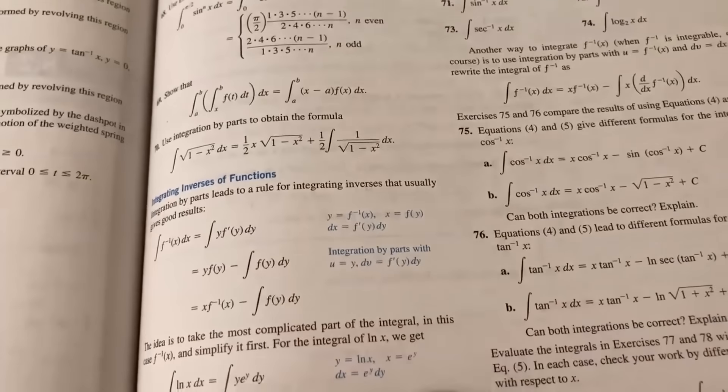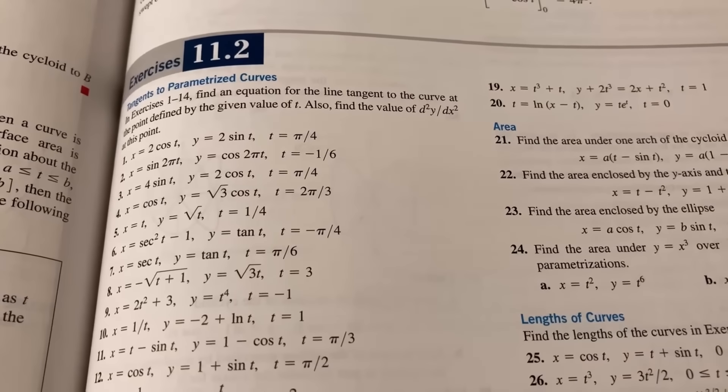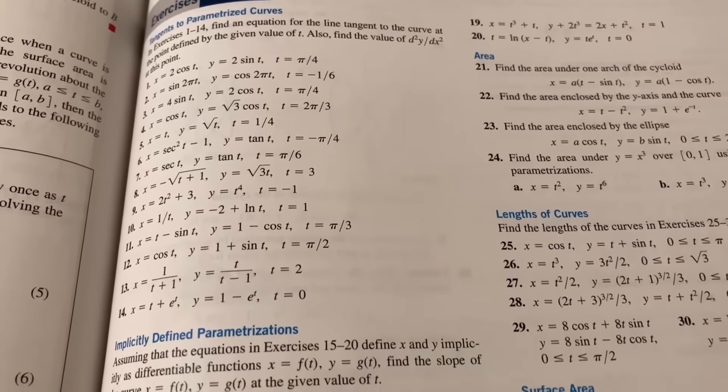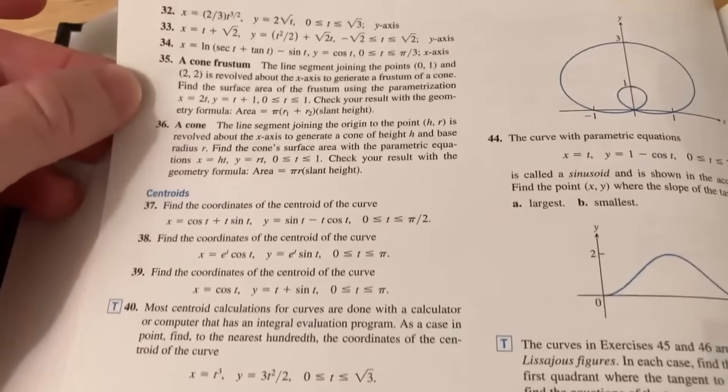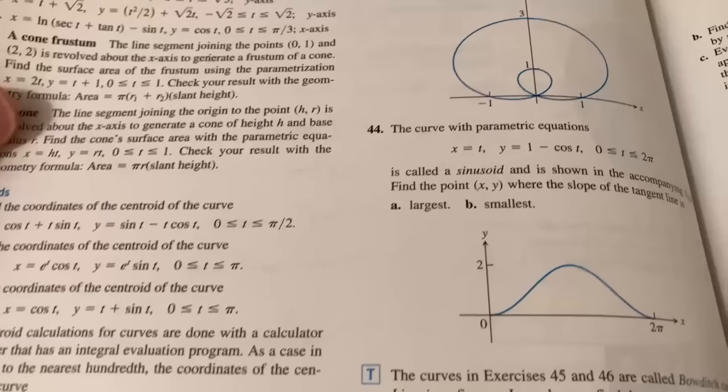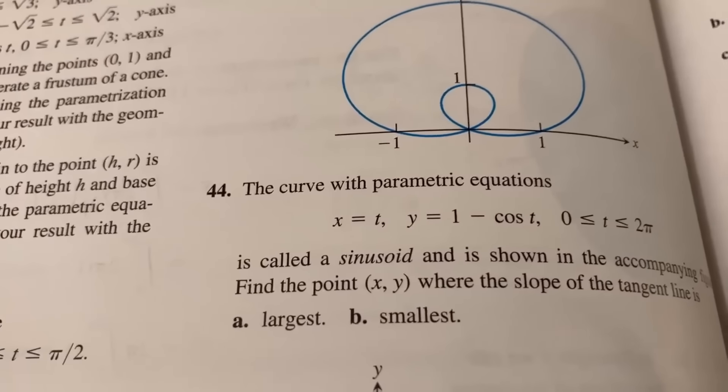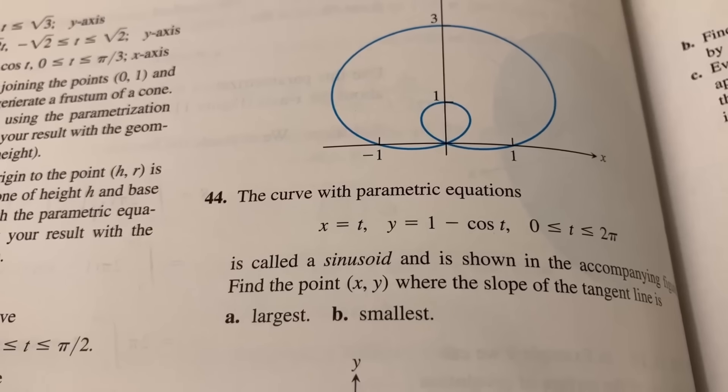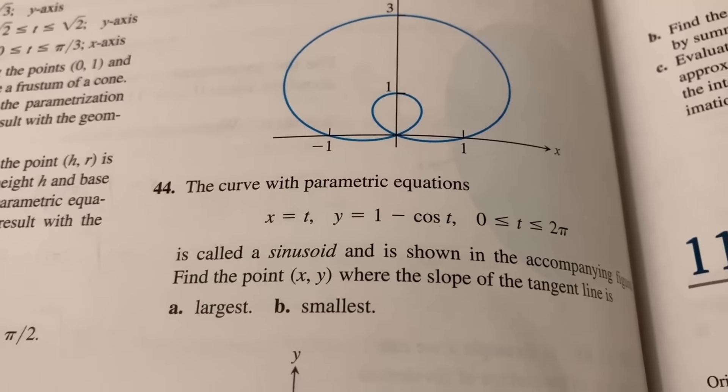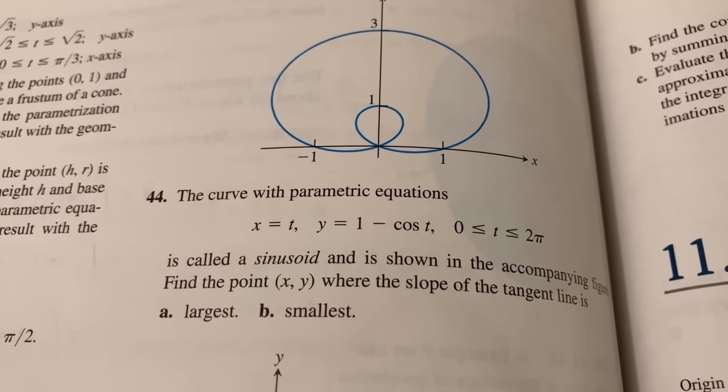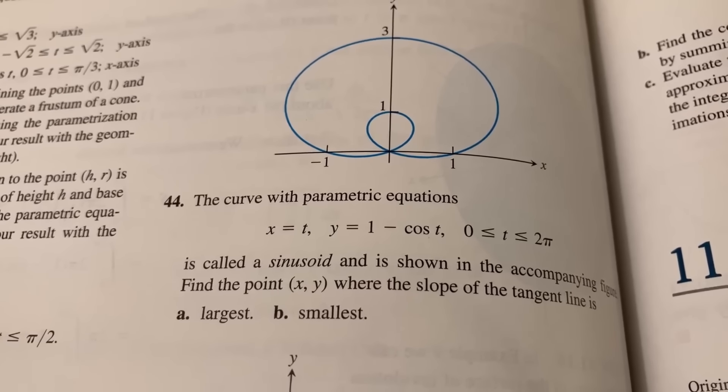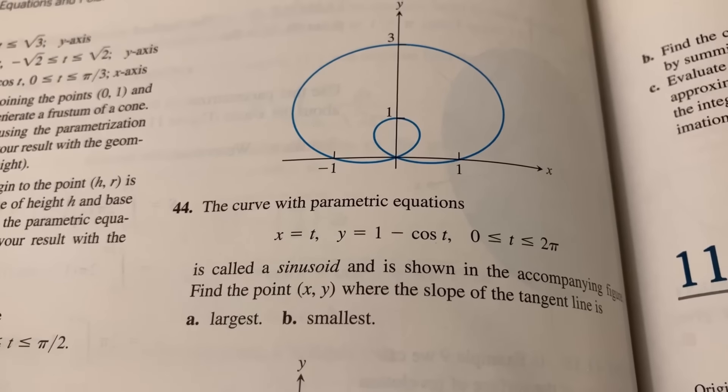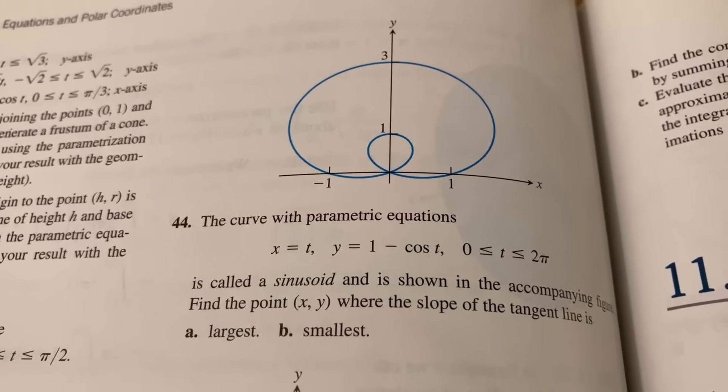These are some of the exercises in this section on parametric curves. And I have to admit, I do like parametric curves. I don't think this is a very popular topic for a lot of people who take calculus, but I do think some of the problems are pretty cool. For example, the curve with parametric equations, x equals t, y equals one minus cosine t, and t is between zero and two pi, is called a sinusoid and is shown in the accompanying figure. Find the point x, y, where the slope of the tangent line is largest and then smallest. That's really cool. So basically, you have to maximize and minimize the derivative.